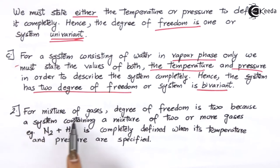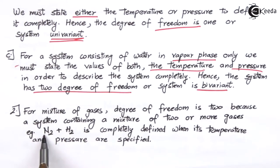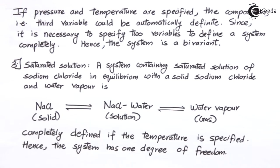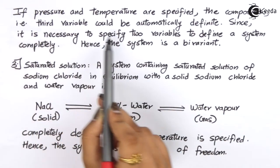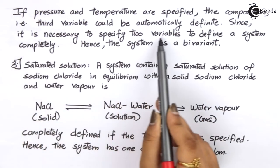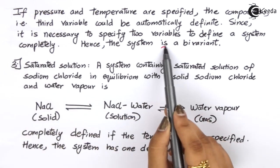For a mixture of gases, the degree of freedom is 2, because a system containing a mixture of two or more gases — for example N₂ plus H₂ — is completely defined when its temperature and pressure are specified. When N₂ and H₂ combine together, there are two things acting on them: temperature and pressure. Since there are two variables, it will be bivariant and the degree of freedom will also be 2. If pressure and temperature are specified, the composition as a third variable could be automatically defined. Hence the system is bivariant.